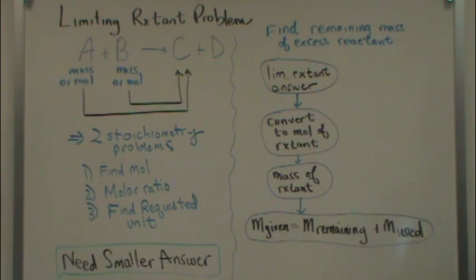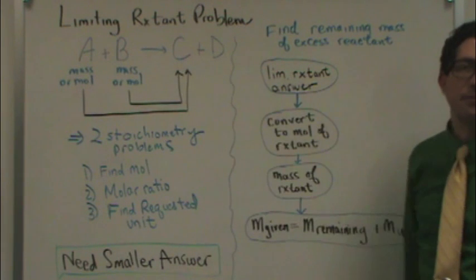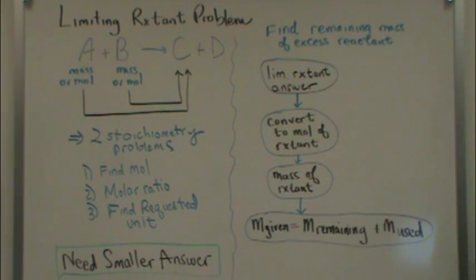So, it's very common to have a problem where we tell you determine the limiting reactant and determine how much C, or products, that reactant produces.